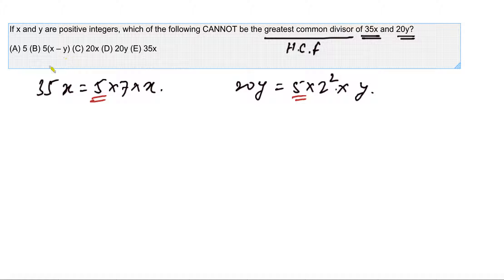Now let's go option by option because the question is asking which of the following cannot be the greatest common divisor. That means four of these options can be the greatest common divisor of these two numbers.